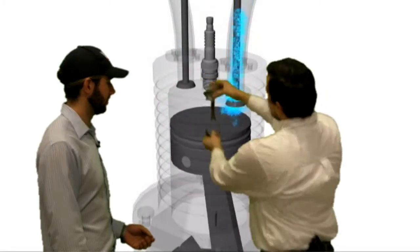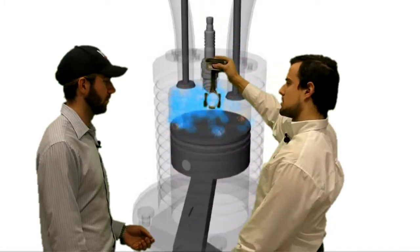In a two-stroke, you only have to move once and you have a combustion cycle.